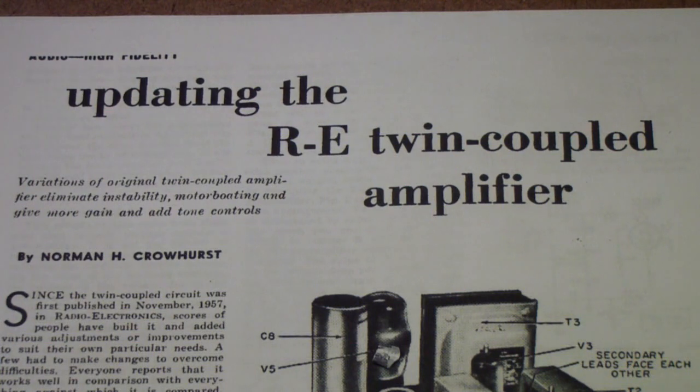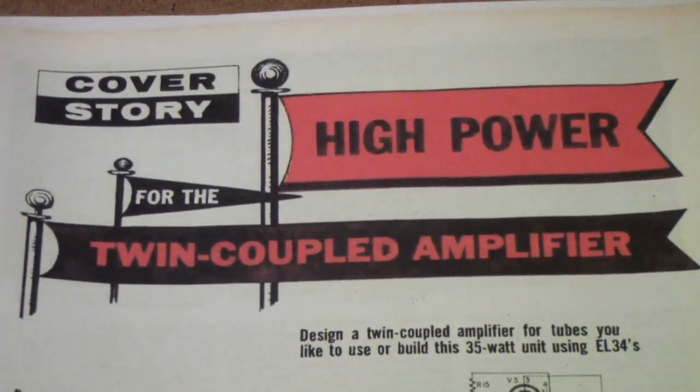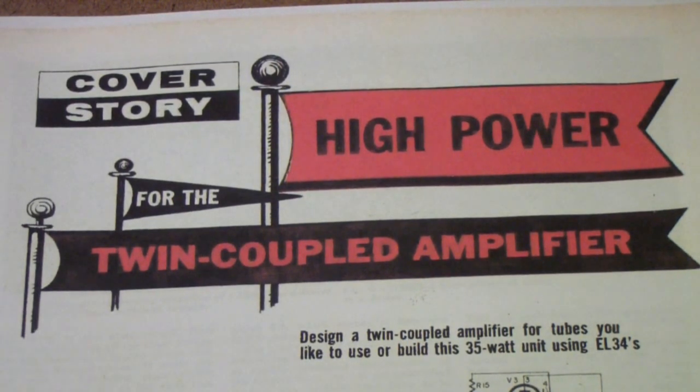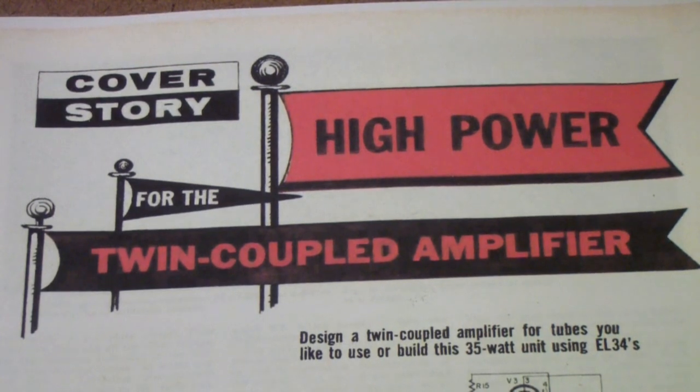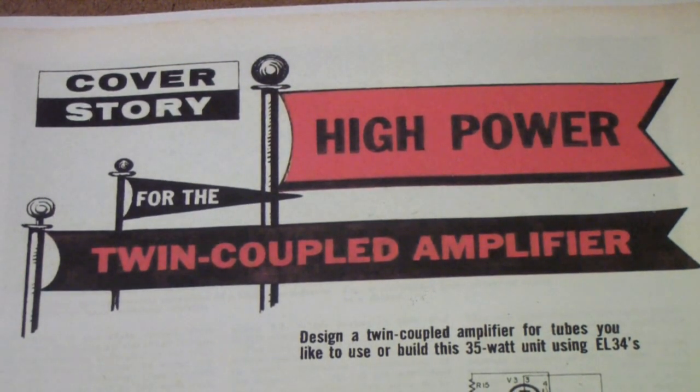The author was Norman Crowhurst, and partly for that reason, and partly because I liked the magazine, I subscribed. A few months later, I received an issue containing this high power for the twin-coupled amplifier story. I was fascinated by the steps that people were taking to improve the fidelity of tube amplifiers. I was looking for a way to get the original article, which had appeared in November of 1957.